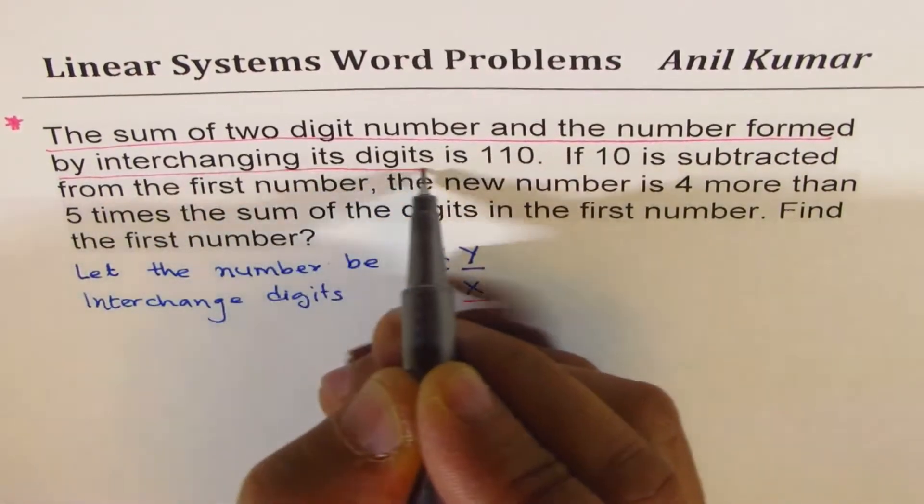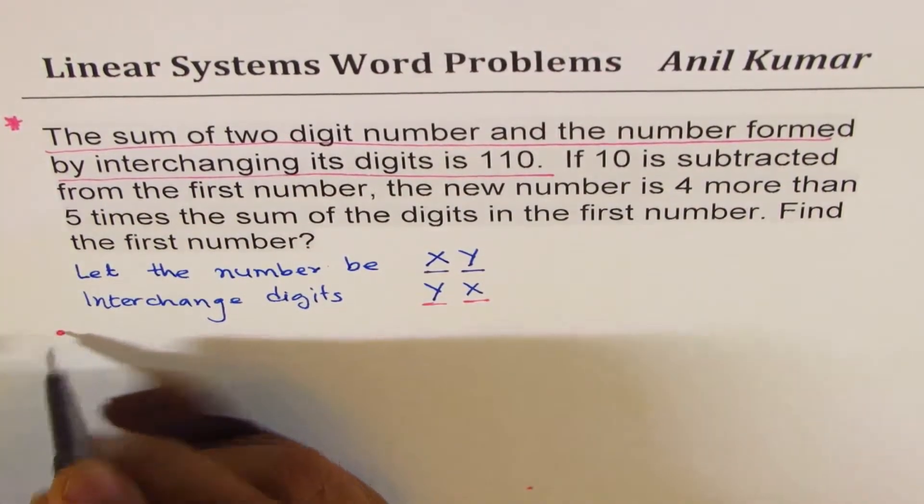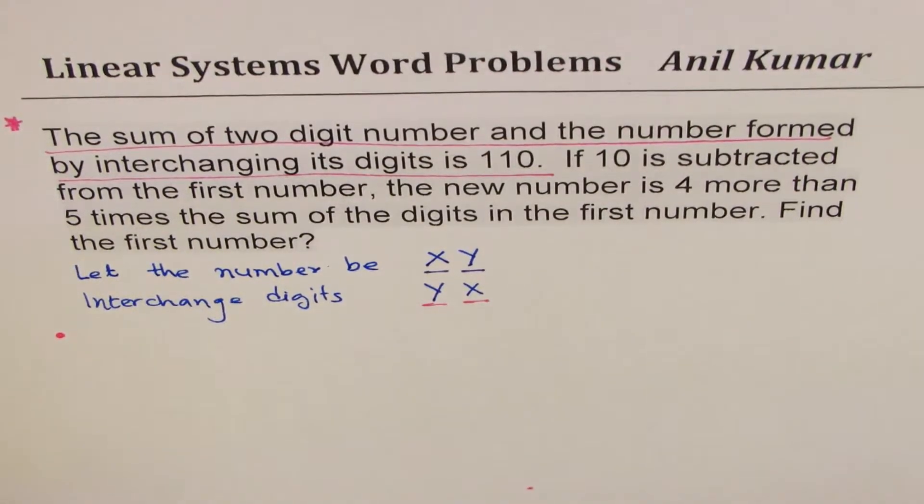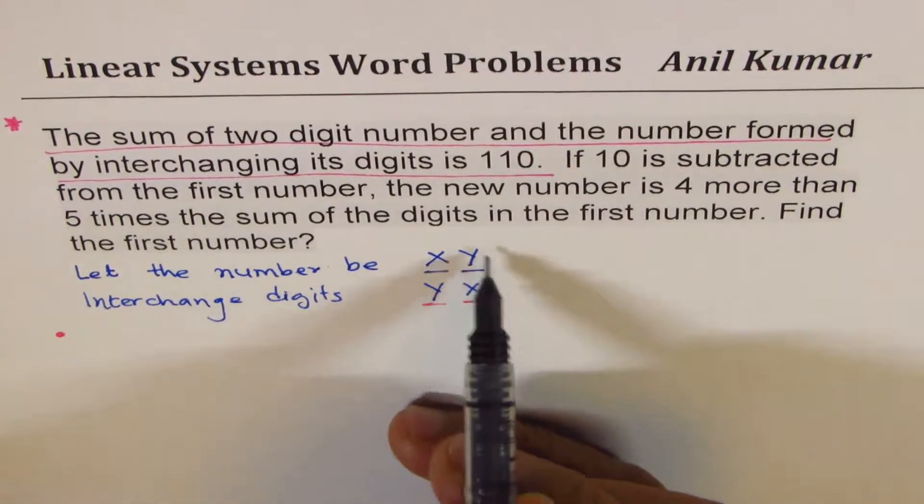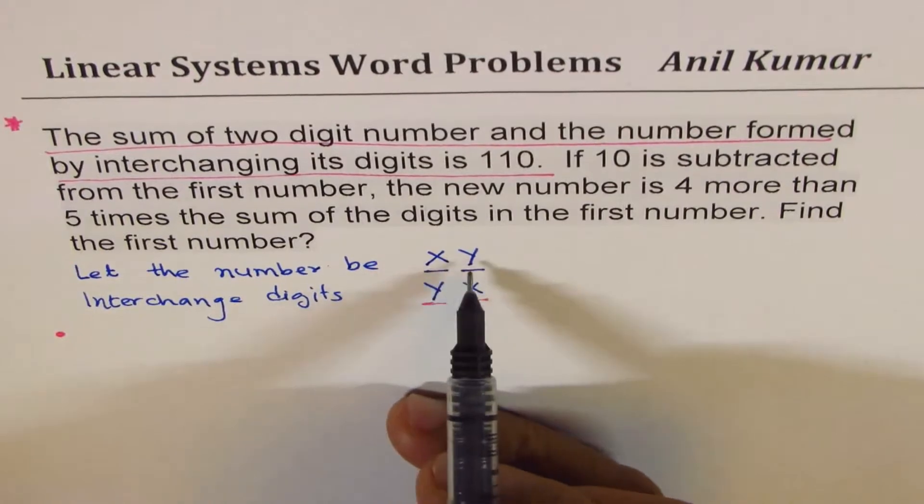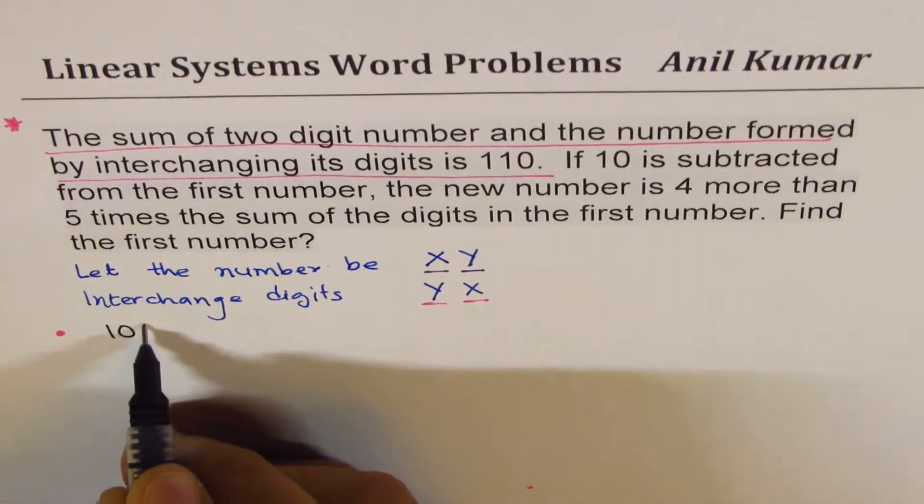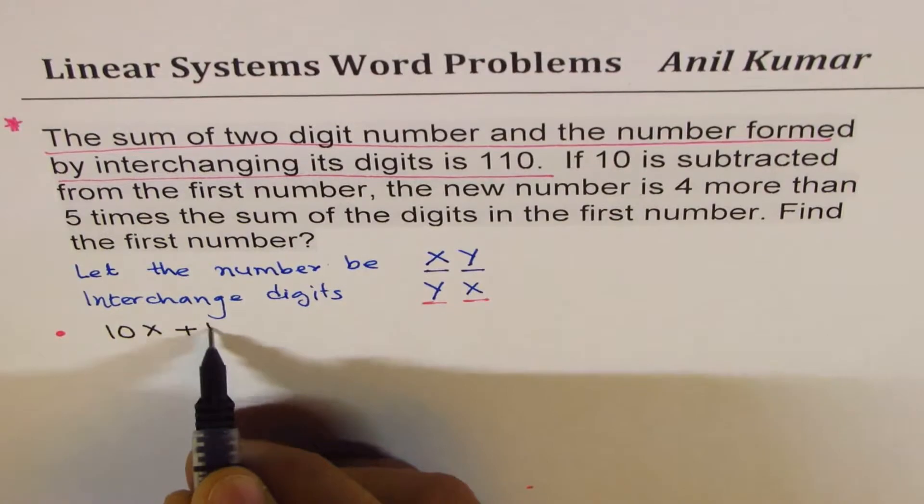What equation do you get? So from the first equation, what equation do we get? So what is this digit and what is the number, x, y?